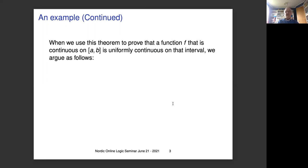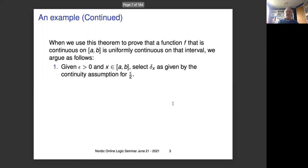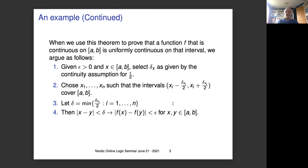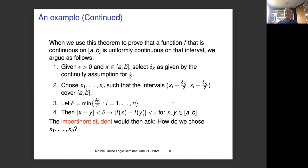When we use this theorem to prove that a function F continuous on the interval AB is uniformly continuous, we argue roughly as follows. Given epsilon greater than zero and x in AB, select delta-x as given by the assumption. Then choose x₁ to xₙ such that the intervals up to delta-xᵢ over two cover AB. Let delta be the minimum of all these delta-xᵢ over two, and then we have the modulus of uniform continuity. The impertinent student will then ask how do we choose x₁ to xₙ — that's not obvious, since we have proved existence but provided no way to find them, even from the data given.